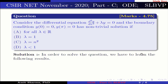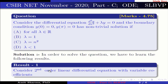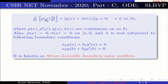In order to solve the equation we need the following results. Result 1: Consider the second order linear differential equation d/dx[p(x) dy/dx] + [q(x) + λσ(x)]y = 0, x ∈ (a,b), where p(x), p'(x), q(x), σ(x) are continuous on (a,b), p(x) > 0, q(x) > 0 on [a,b], and λ is real, subject to boundary conditions a₁y(a) + b₁y'(a) = 0 and a₂y(b) + b₂y'(b) = 0. This is known as the Sturm-Liouville boundary value problem.